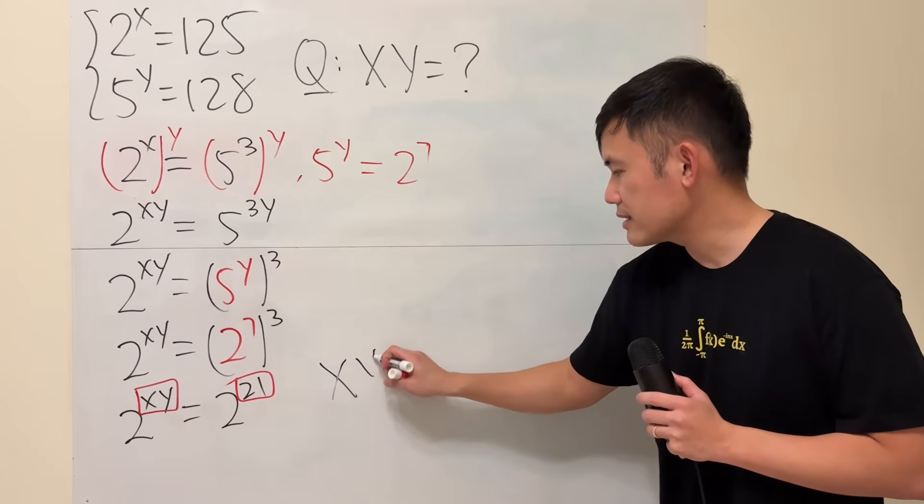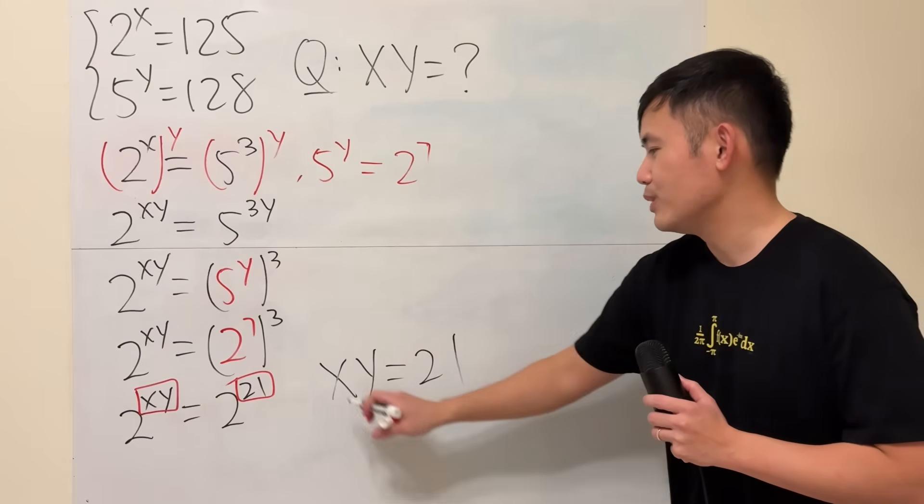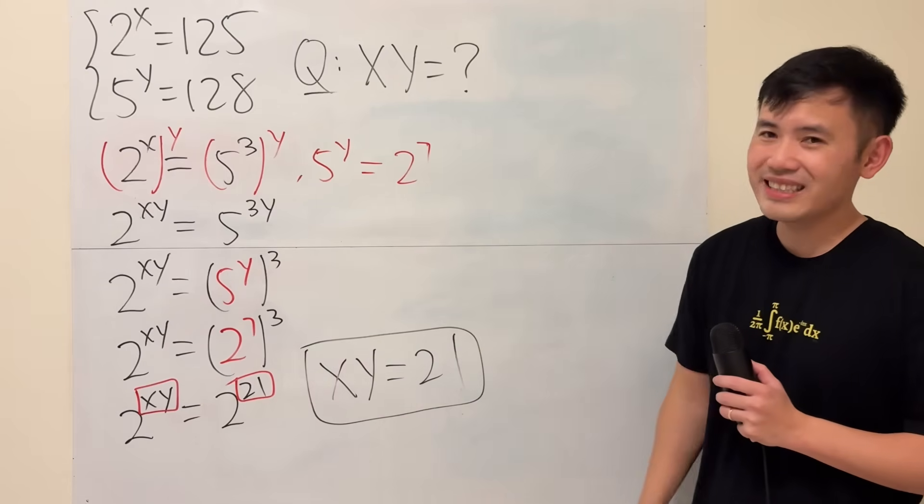Ladies and gentlemen, we conclude that x times y has to be 21, and then we are done. Just like that. Let's see.